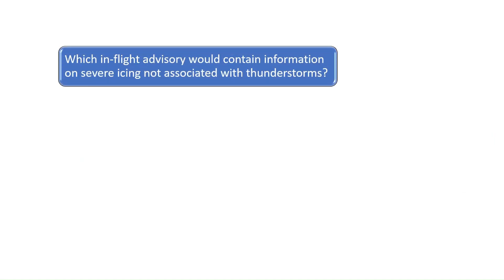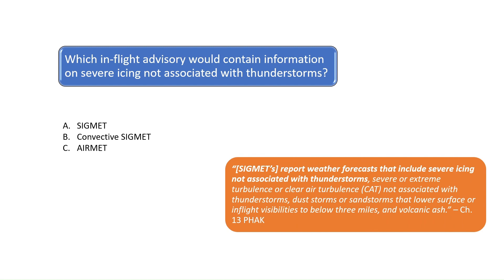Which in-flight advisory would contain information on severe icing not associated with thunderstorms? According to Chapter 13 of the Pilot's Handbook of Aeronautical Knowledge, SIGMETs report weather forecasts that include severe icing not associated with thunderstorms, severe or extreme turbulence or clear air turbulence not associated with thunderstorms, dust storms or sandstorms that lower surface or in-flight visibilities to below three miles, ice, and volcanic ash. The correct answer is A.